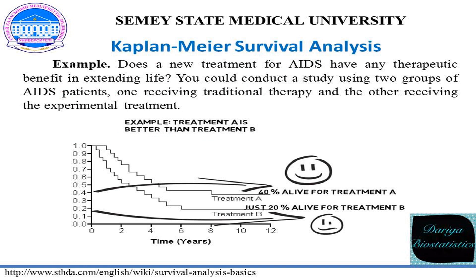Does a new treatment for AIDS have any therapeutic benefit in extending life? You could conduct a study using two groups of AIDS patients, one receiving traditional therapy and the other receiving the experimental treatment. Constructing a Kaplan-Meier model from the data would allow you to compare overall survival rates between the two groups to determine whether the experimental treatment is an improvement over traditional therapy. You can also plot the survival or hazard functions and compare them visually for more detailed information.